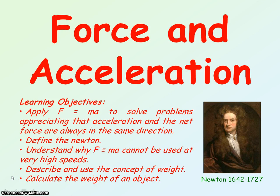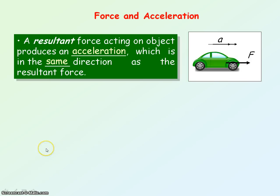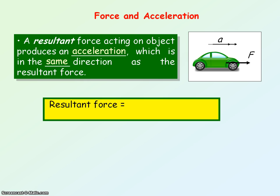We're going to be looking at force and acceleration, and in particular the equation F equals mA. We'll also be looking at the concept of weight. When a resultant force acts on an object — a resultant force is also known as a net force, that is an overall force which is non-zero — that resultant force produces an acceleration on that object, and that acceleration is in the same direction as the resultant force. We can say resultant force is equal to the mass times the acceleration, and the symbol equation is F equals mA.